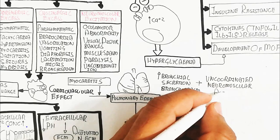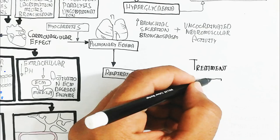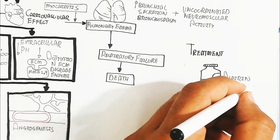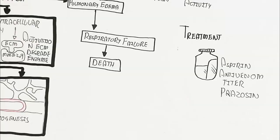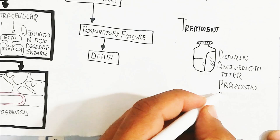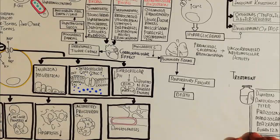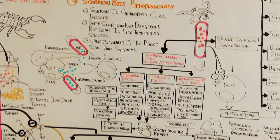Treatment can reverse these adverse effects: anti-venom, aspirin, prazosin, midazolam, and diazepam — administered every 12 hours. We have discussed scorpion bite pathophysiology in this video. Remember, many scorpions are not dangerous, but some species are. Thanks for watching; please subscribe, like, and share.